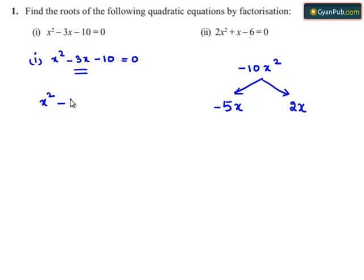So x square minus 5x plus 2x minus 10 is equal to 0. x can be taken as common. x times of x minus 5 plus 2 can be taken as common. 2 times of x minus 5 is equal to 0.